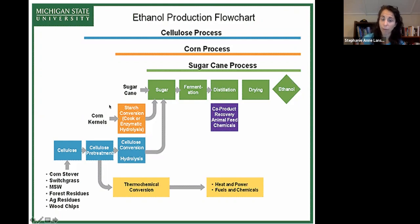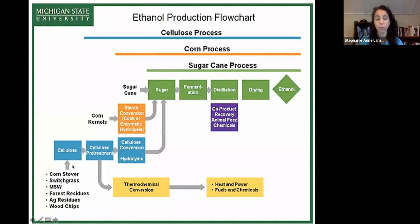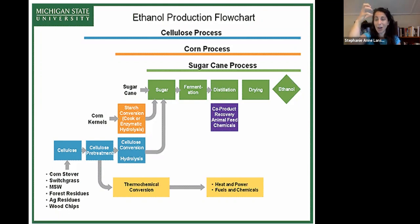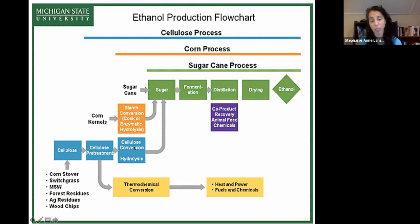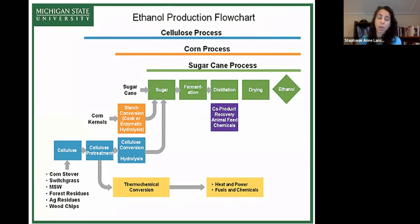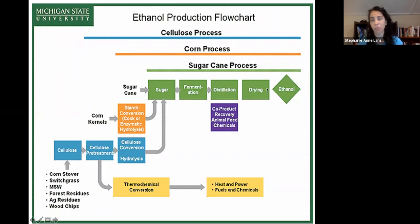If we start with corn kernels, we convert that starch through cooking or enzymatic hydrolysis to get the glucose for fermentation. If we start with cellulose — which can be corn stover (the stalk, not the cob), switchgrass, municipal solid waste, forest residue, ag residue, or wood chips — we do a pretreatment process. Whatever isn't converted can be used for heat and power, while the rest goes through hydrolysis to sugar and then ethanol production.